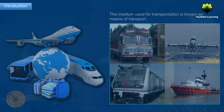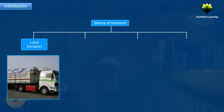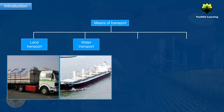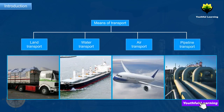There are four types of means of transport: land transport, water transport, air transport and pipeline transport. Let us explore more about each of them.